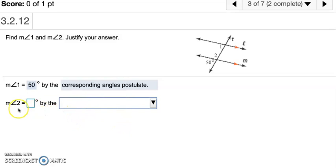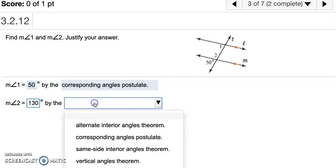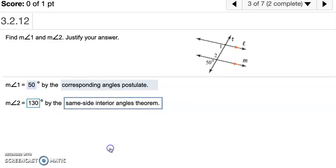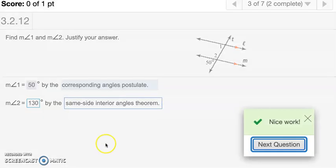Angle 2. Angles 1 and 2 are same-side interior angles, which means they're supplementary. So if 1 is 50, 2 has to add up to 180 from that. So 180 minus 50 is 130. And that is because 1 and 2 are same-side interior angles. And that's number 3.